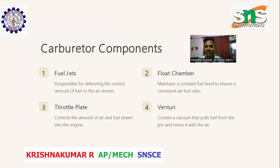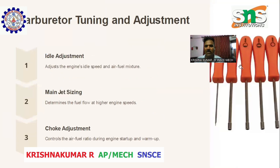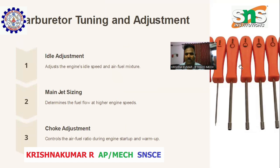Venturis create a vacuum that pulls fuel from the jets and mixes it with the air. Carburetor timing and adjustment: Idle adjustment — adjust the engine's idle speed and air-fuel mixture. Main jet sizing determines the fuel flow at higher engine speeds. Choke adjustment controls the air-fuel ratio during engine start-up and warm-up.